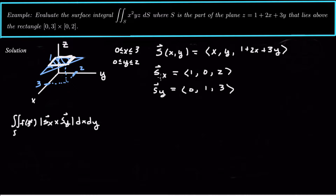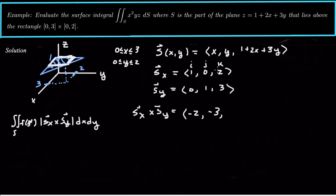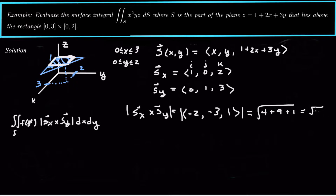I've set them up so I can take their cross product. So with i, j, and k, taking sx cross sy: cover up i-hat, get 0 times 3 minus 2 times 1, so negative 2. Cover up j-hat, put a negative, so negative 3 minus 0, which is negative 3. Cover up k-hat, get 1 minus 0, which is 1. Now take the magnitude of that vector — square root of negative 2 squared plus negative 3 squared plus 1 squared, which is 4 plus 9 plus 1, so square root of 14.